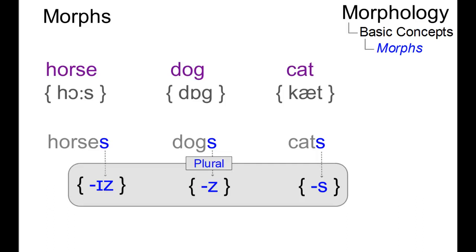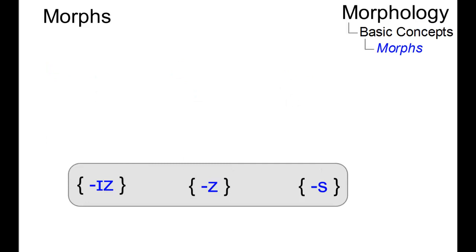Thus, they are members of a family of morphs that vary in sound but not in meaning. Such family members are referred to as allomorphs, and their head term is referred to as the morpheme.